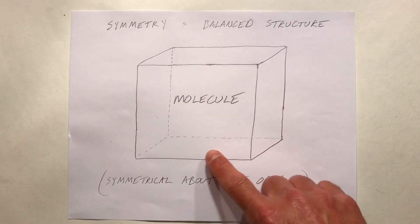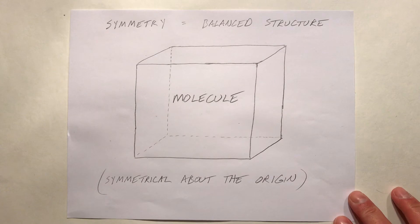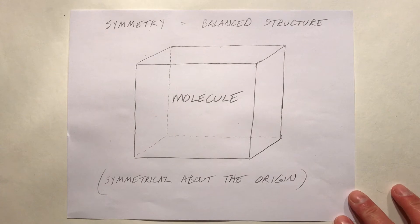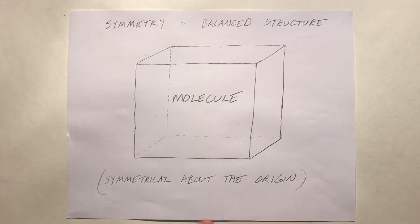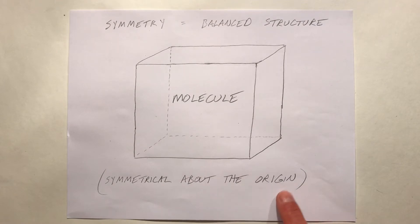If there is a balance to the structure between the left and the right, the top and the bottom, and the front and the back, then that would be considered a symmetrical molecule — symmetrical in all directions about the center.